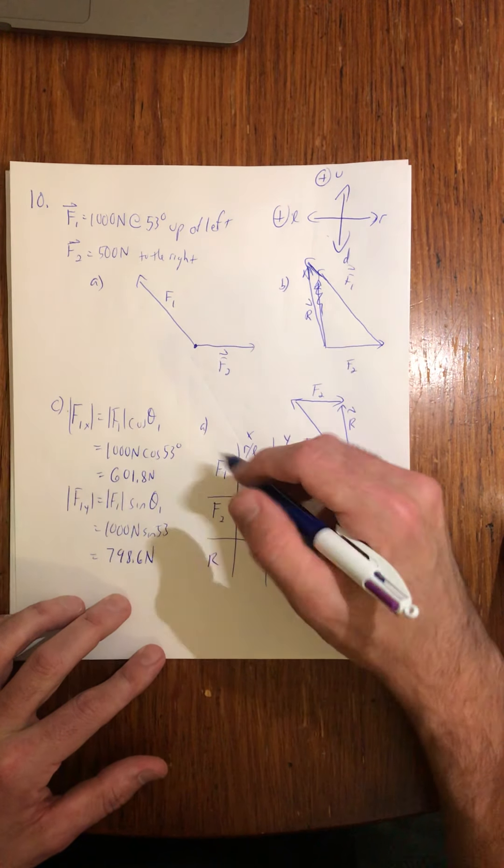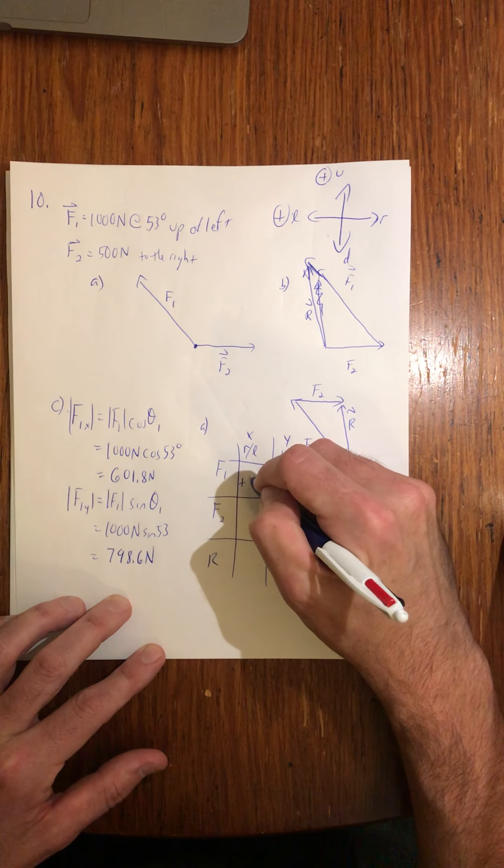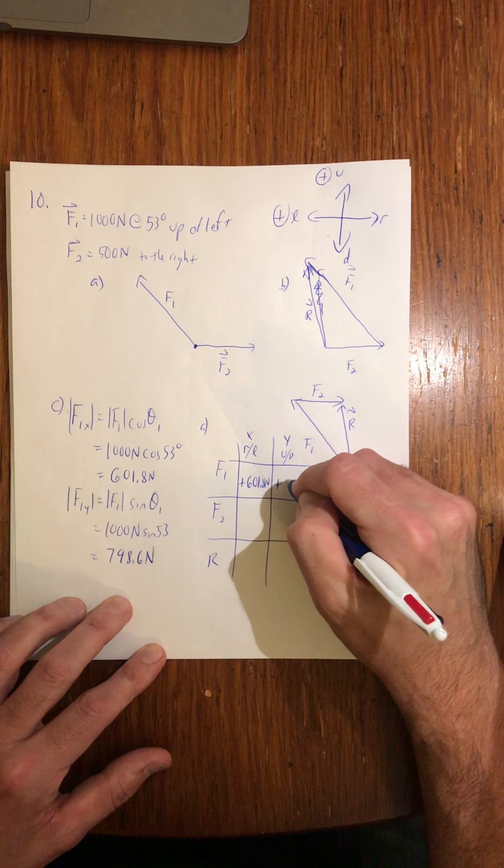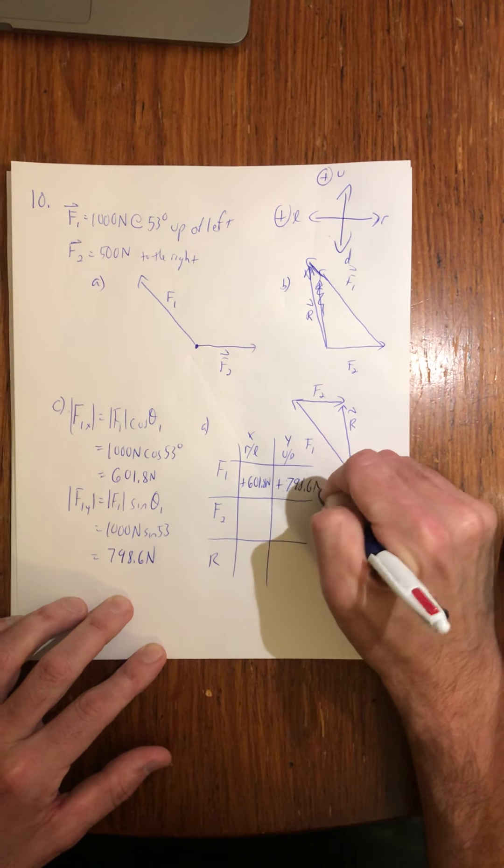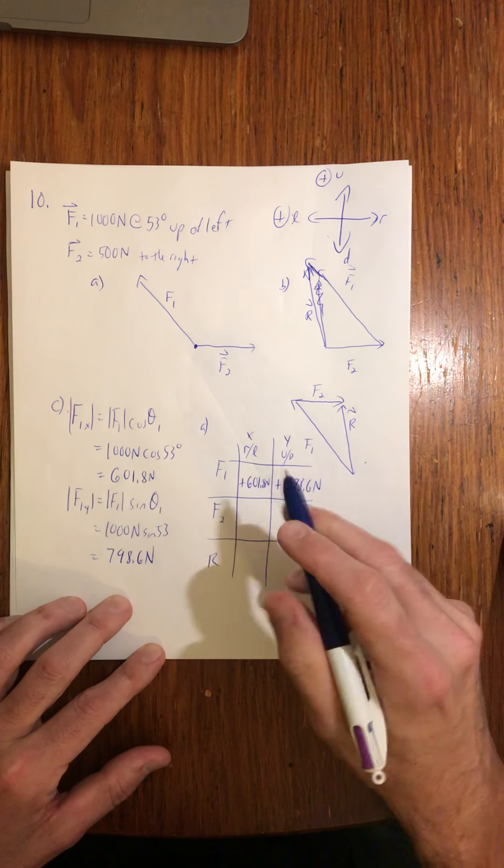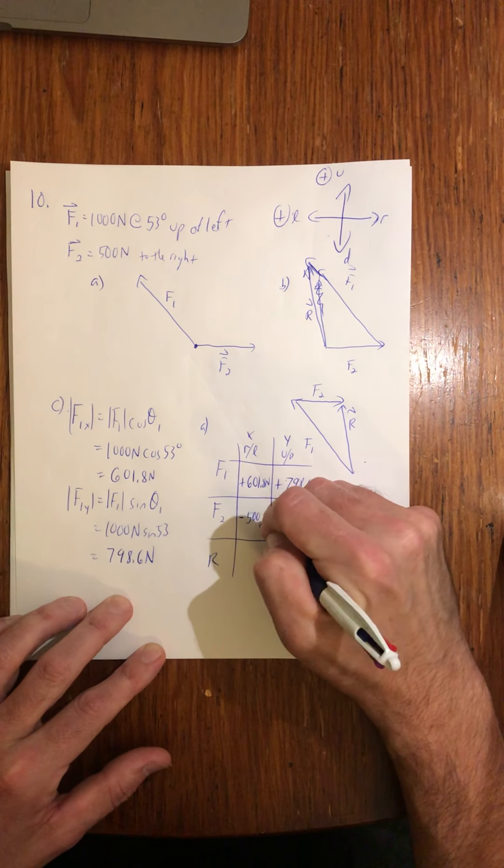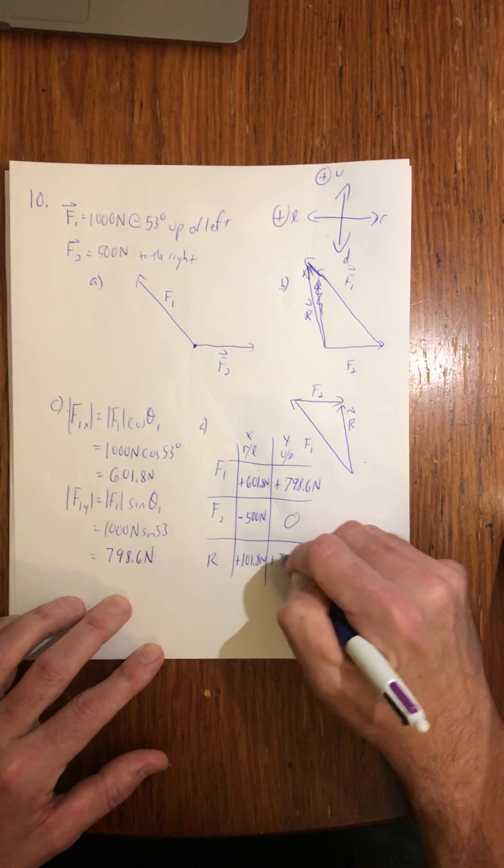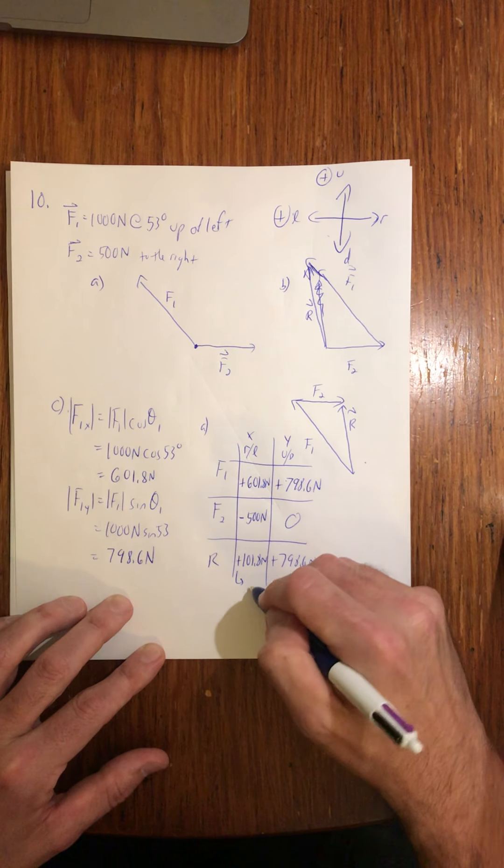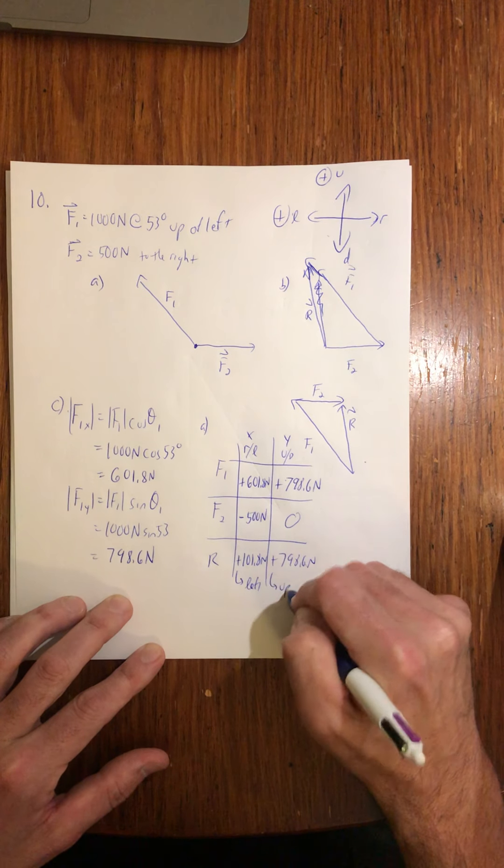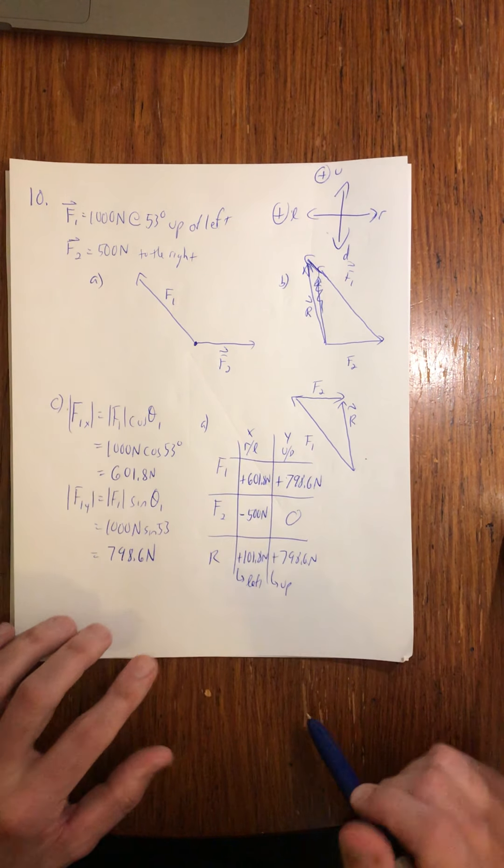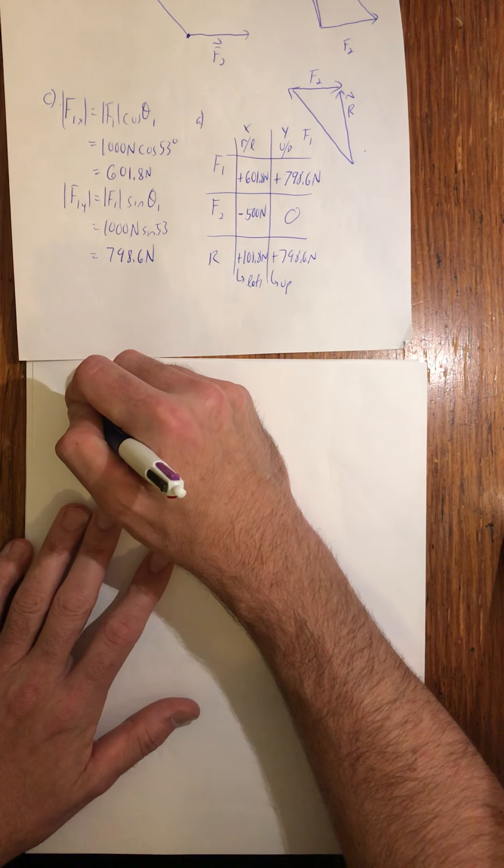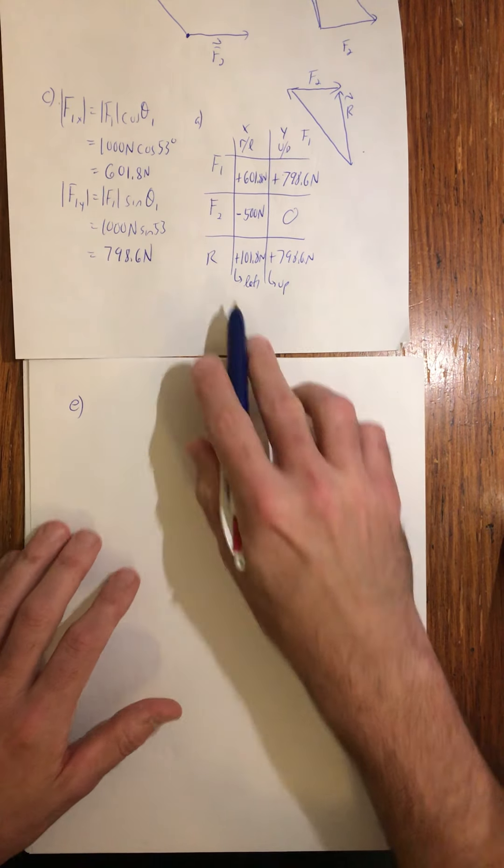Vector 1, up and left. I made both those positives, so I'm going to put in the positives there. The left part of that is 601.8 newtons. The right part of the, up part of that, excuse me, is 798.6 newtons. F2 is just to the right, so that's going to be in the negative direction along this axis, so 500 newtons. And that's zero. So that gives us plus 101.8 newtons and plus 798.6 newtons. So notice that this is left and up. So it is not a right triangle. It does have some sort of weird angle to it. I don't want to squish, so I'm just going to go on to the next page then. So now I want to find D, or E, excuse me, those are the components. Those are my answers to D.